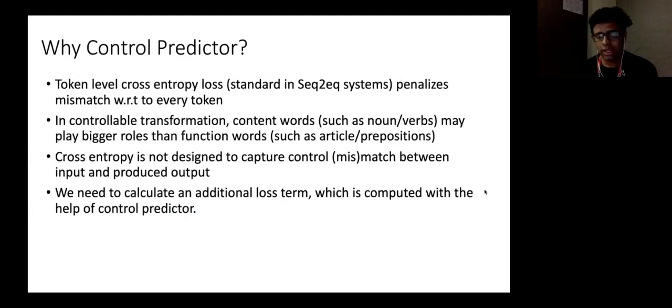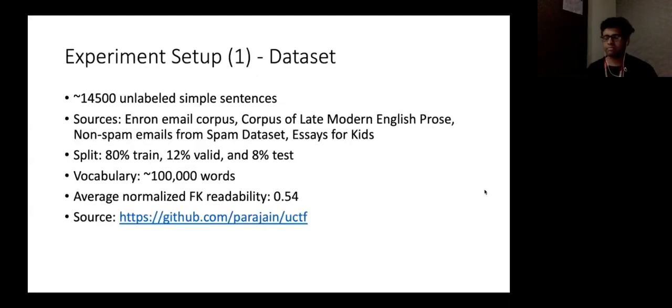Right. So with this idea, we experiment our system with a dataset featuring around 14,500 unlabeled simple sentences. This is quite less. However, we do have promising results with such a small amount of data. The sources are from Enron email corpus, the sentences are taken from Enron email corpus, the corpus of late modern English prose, non-spam email from spam dataset and SS for kids. We have split the dataset into 80, 12 and 8 percent train, valid and test splits and the vocab size is close to 100,000. The average normalized Flesch-Kincaid readability for the dataset is 0.54. This is the normalized score which ranges from 0 to 1 and obviously the dataset is available in this link.